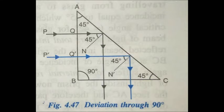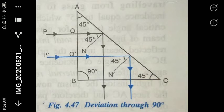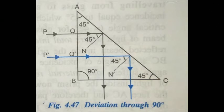After suffering total internal reflection, the ray of light hits face BC at an angle of incidence equal to 0 degrees — normal incidence — so it passes undeviated through face BC. Thereby the ray of light is deviated through 90 degrees. This action of the prism is used in a periscope.